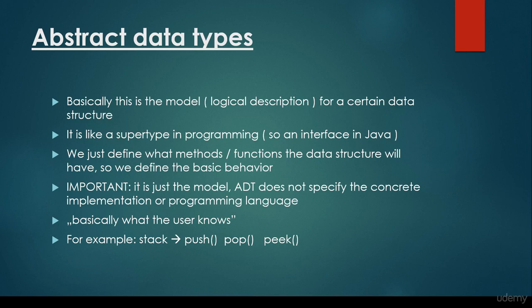What is an abstract data type? Basically this is the model or the logical description for a certain data structure. It is like a supertype in programming — in Java for example an interface — where we define what's going to be the behavior, what methods we would like to implement. So we just define what methods and functions the data structure will have, defining the basic behavior without the concrete implementation.